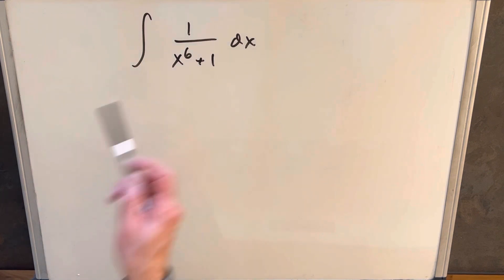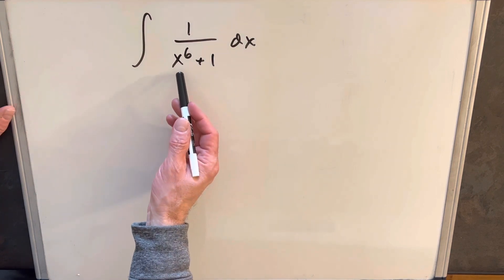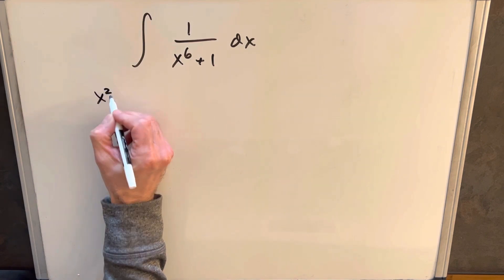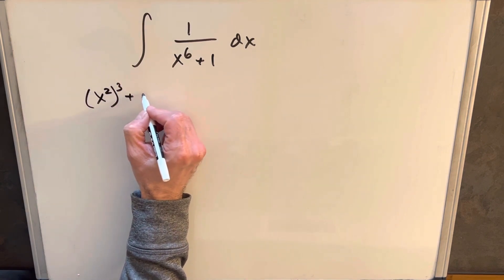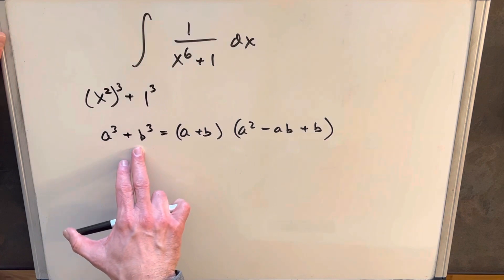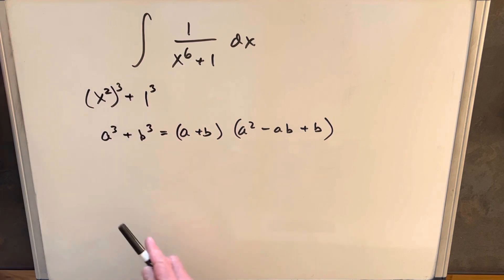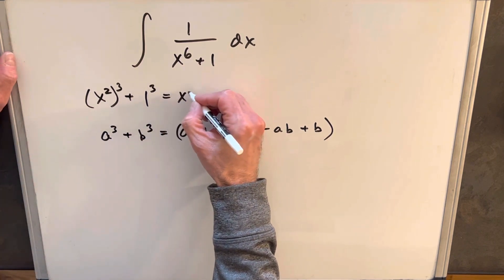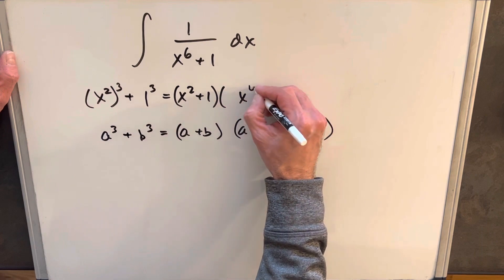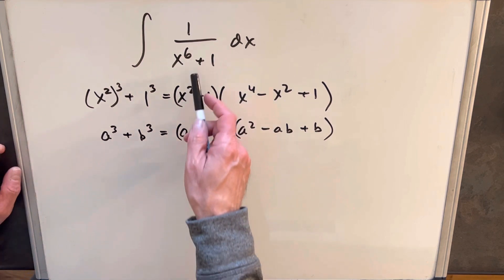What I want to do is factor this denominator and see what that does for us. We can write this as the sum of two cubes: x to the 6 as x squared cubed, and 1 as 1 cubed. Using the sum of two cubes formula, where x squared is our a value and 1 is our b, we can write this as (x squared + 1)(x to the 4th minus x squared + 1).